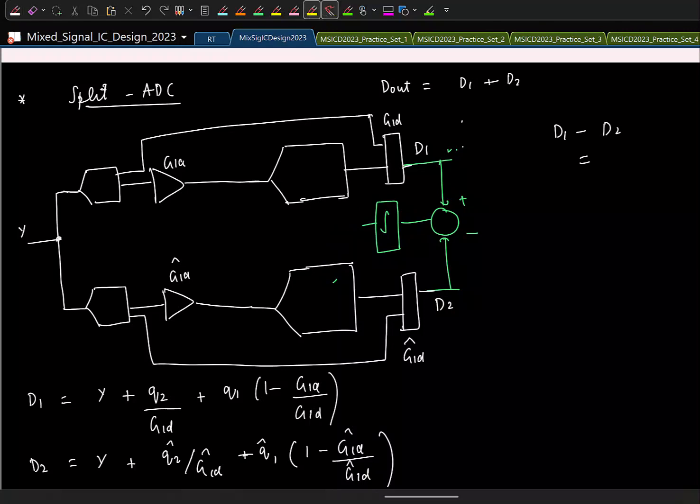The input gets canceled. So, I will not write Q2 term because Q2 term is something that you want. I will just write only the error terms. So, I will have Q1 into 1 minus G1A by G1D. So, now let us say Q1 and Q1 hat, they are not same. They are sort of independent. Then the only way for this error signal to go to 0 or what is the only way for this entire thing to go to 0? Independently both of them must go to 0. So, which means this will get corrected, this will get corrected.